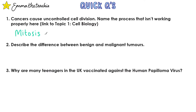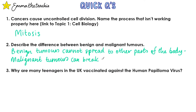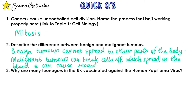Question two: describe the difference between benign and malignant tumours. Benign tumours cannot spread to other parts of the body, whereas malignant tumours can break off some of their cells, which then spread in the blood and can cause secondary tumours.